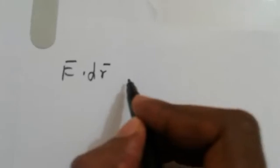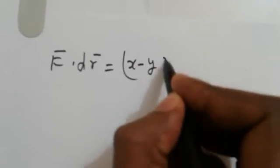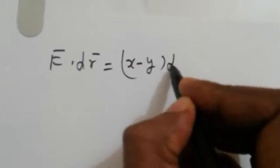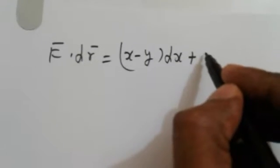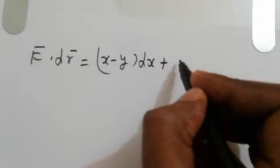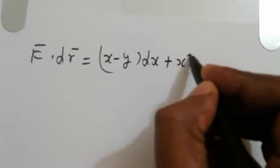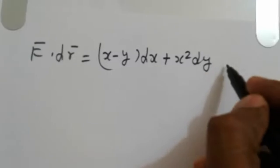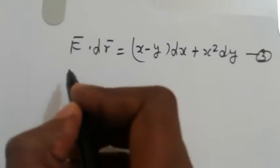So F·dr simplifies to (x − y)dx + x² dy. This is equation number 2.